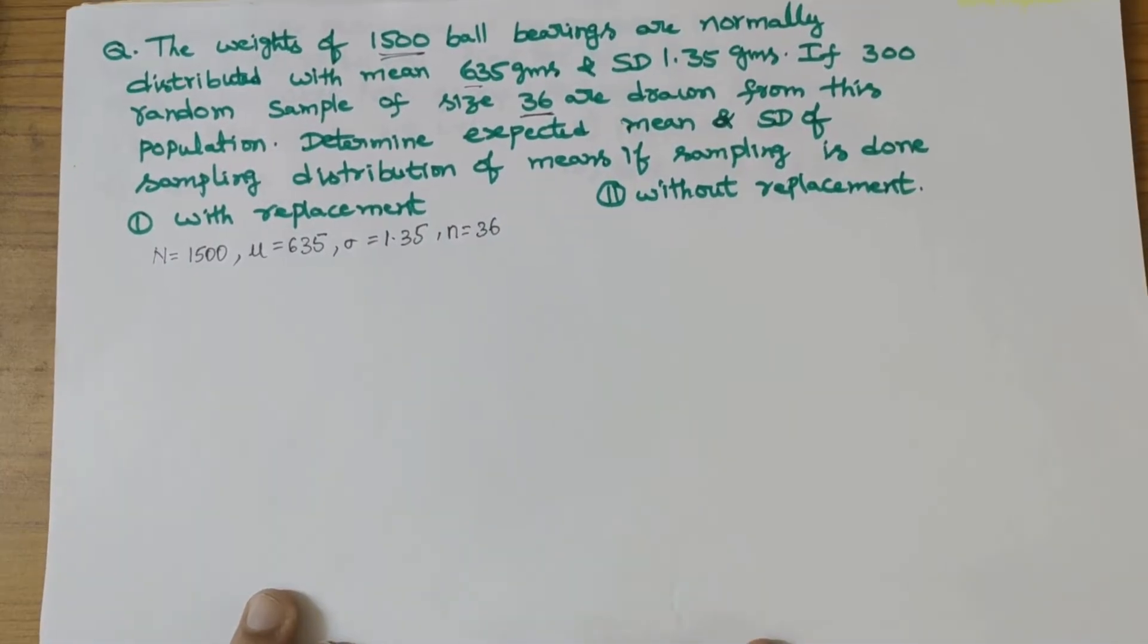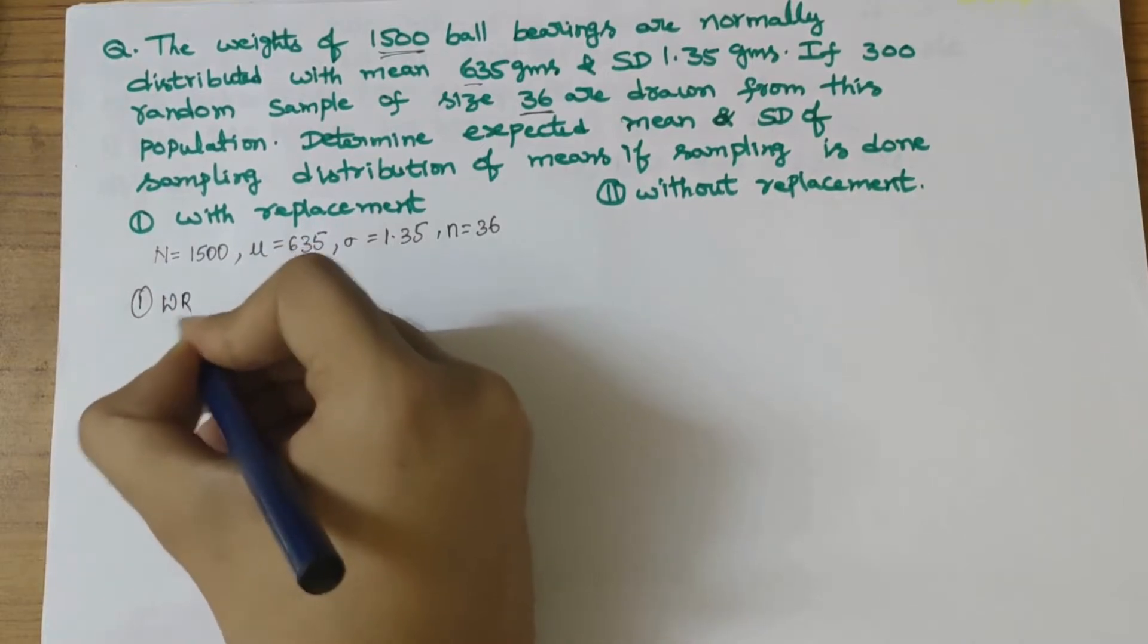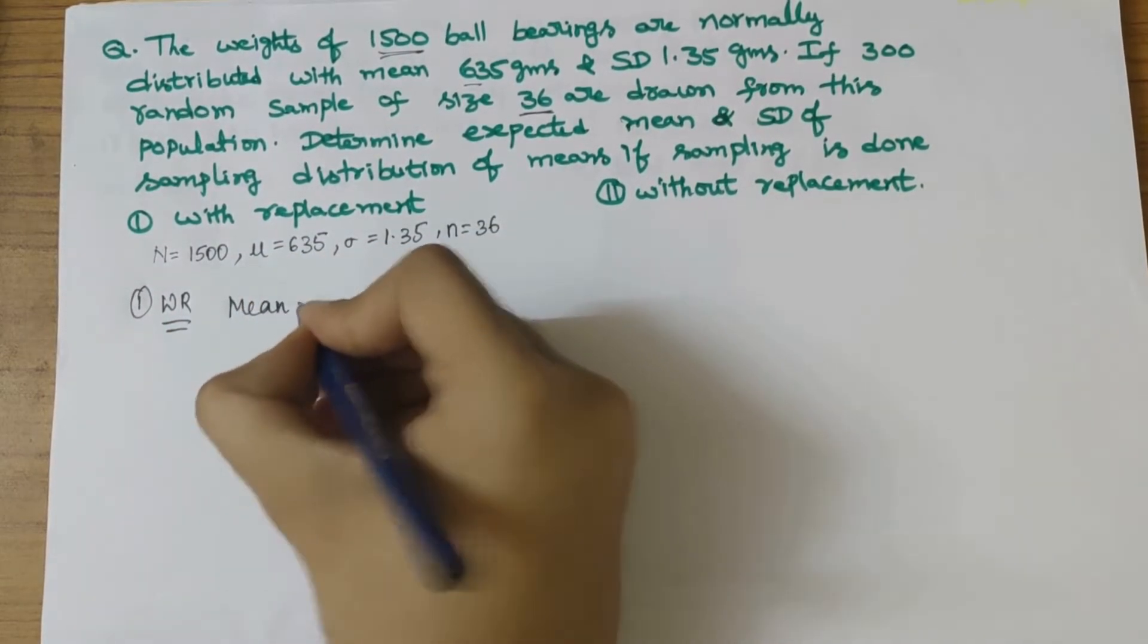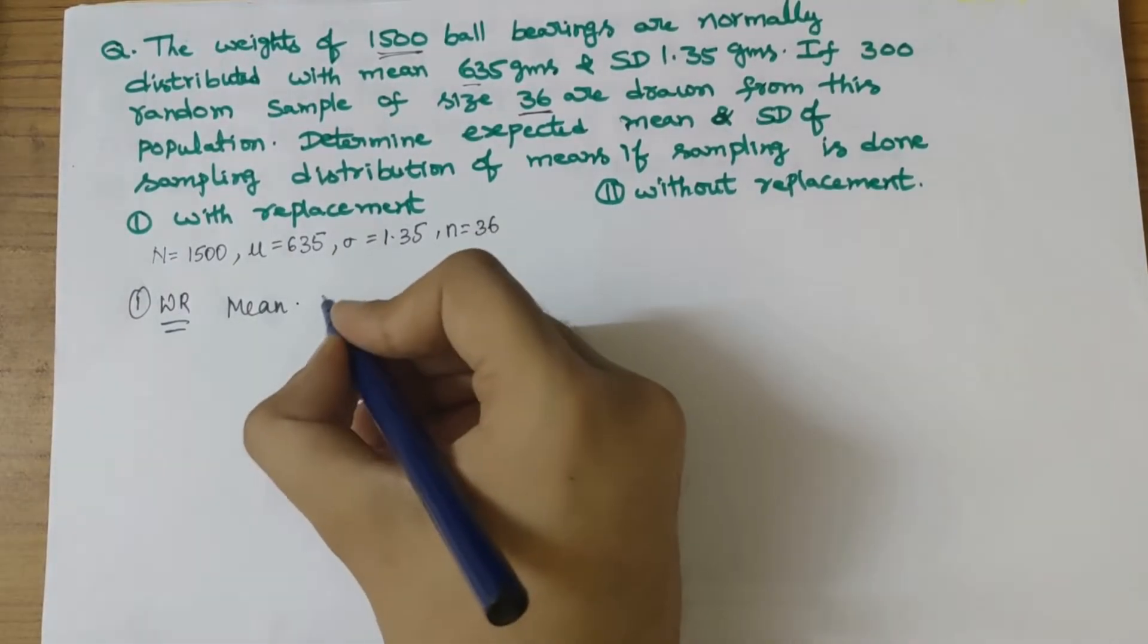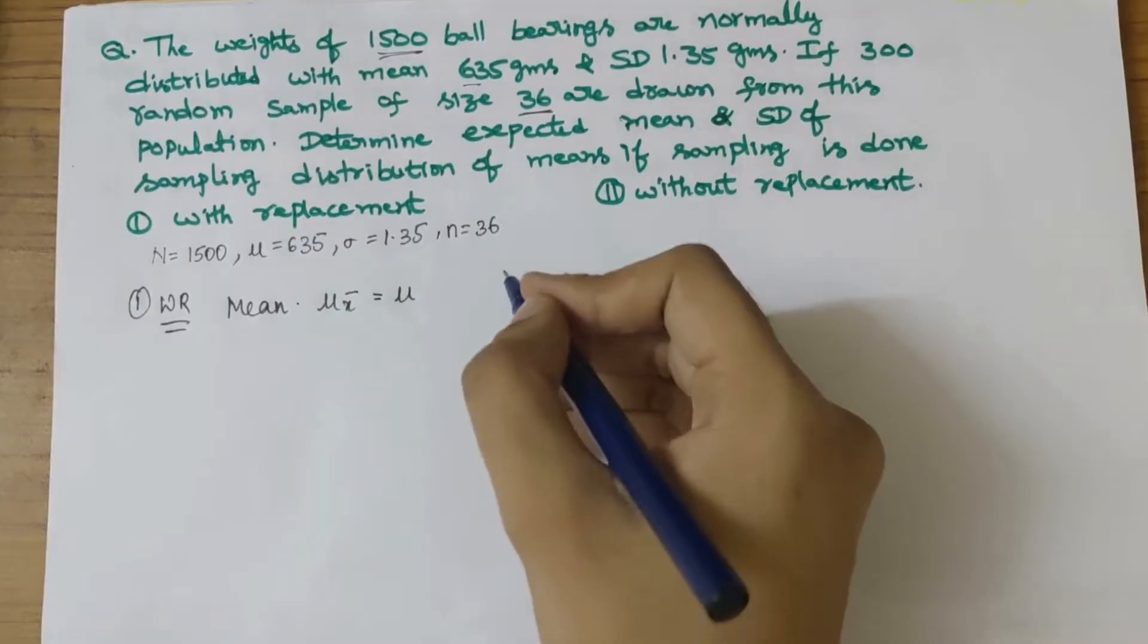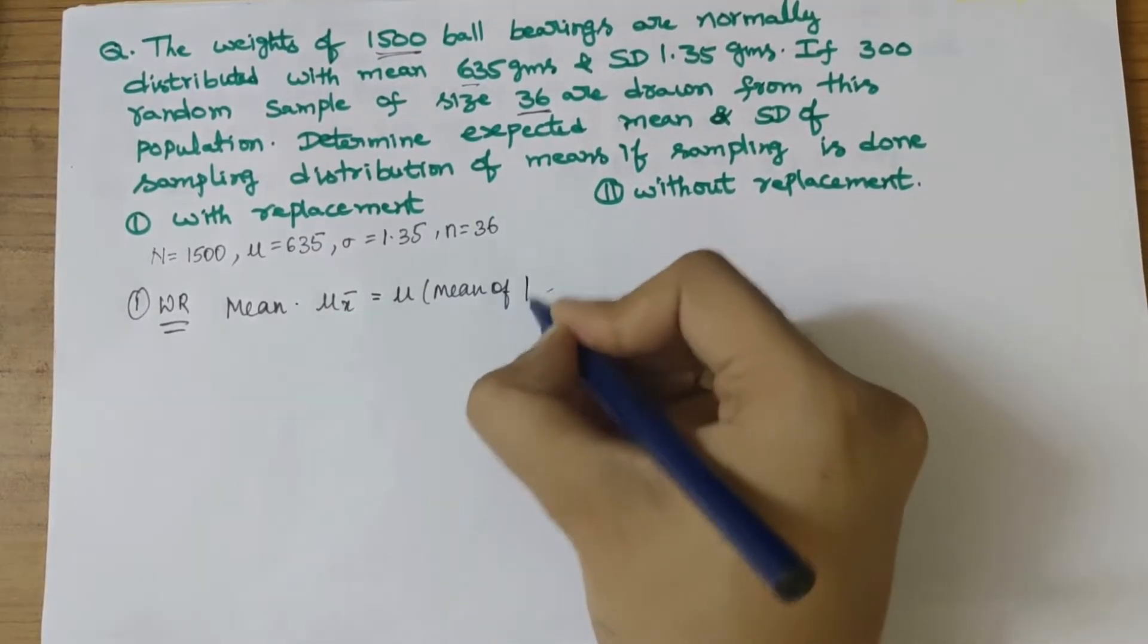First, let's solve with replacement. To find the mean, we know that μx̄ equals μ, which is the mean of the population.